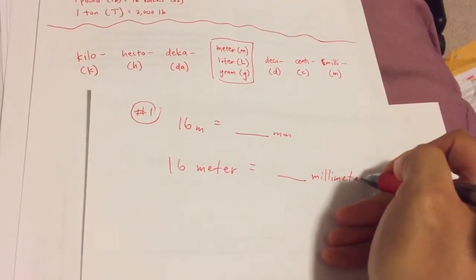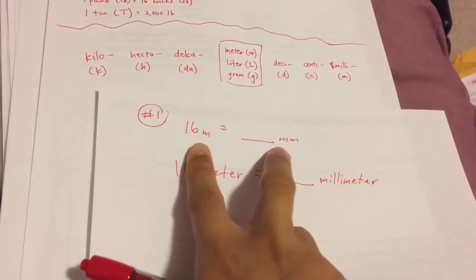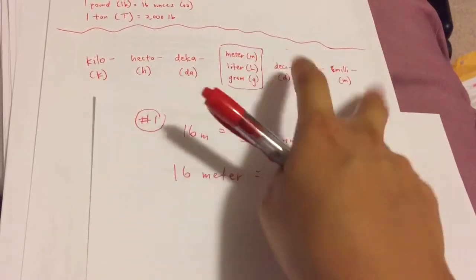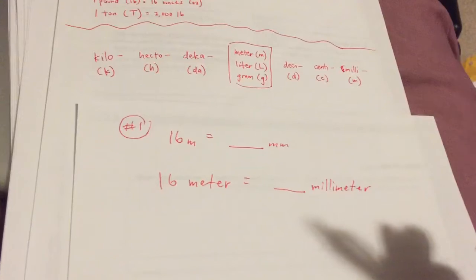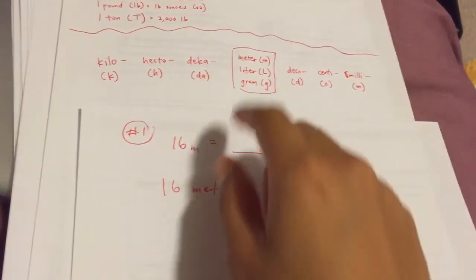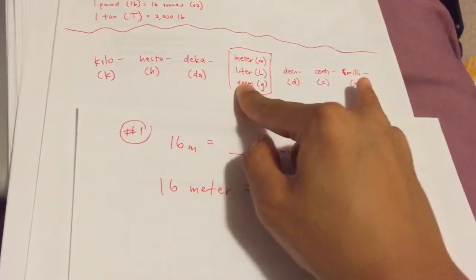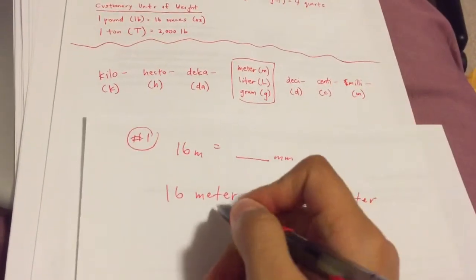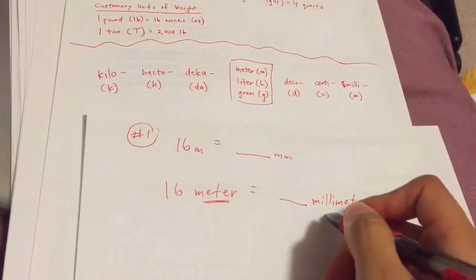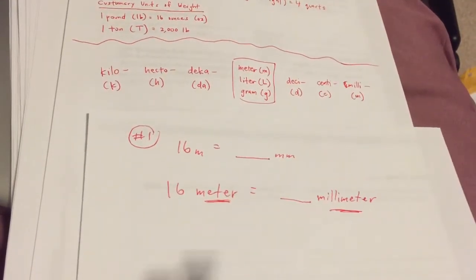All you have to do for step one is to take this shorthand version and use our cheat sheet to see where it's going. Now, the second step is to count. How do you get from meters to millimeters? I went from meter to millimeter, and I'm using those because that's what it's asking for.